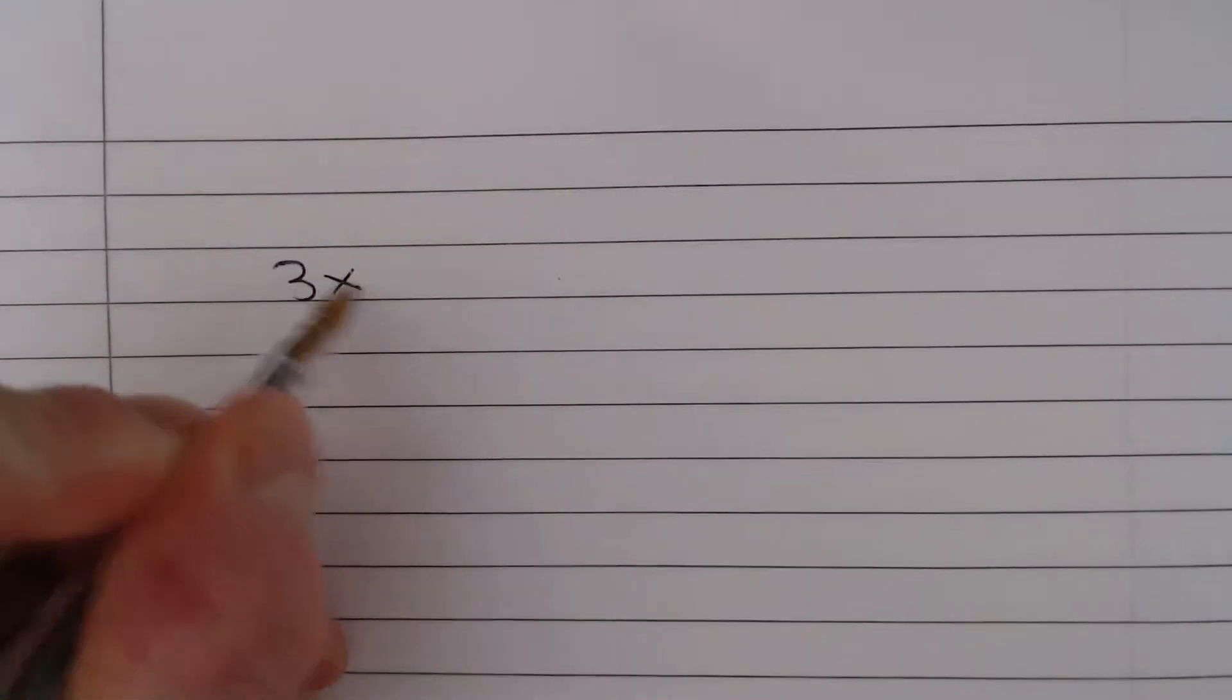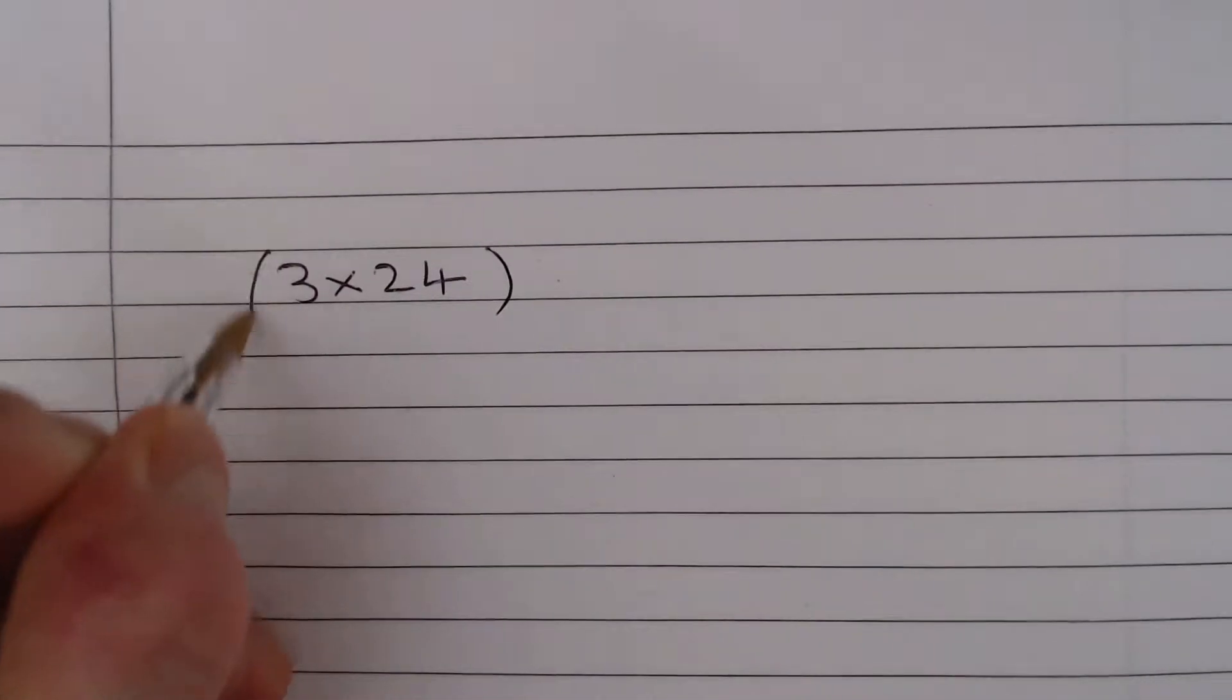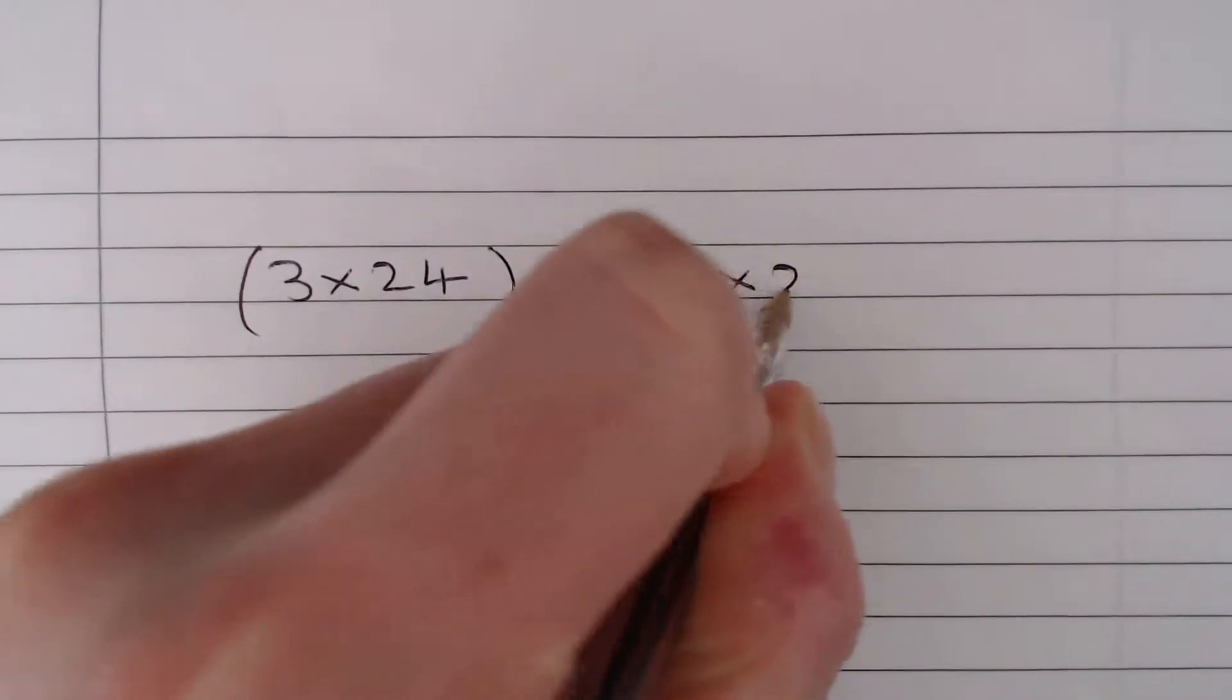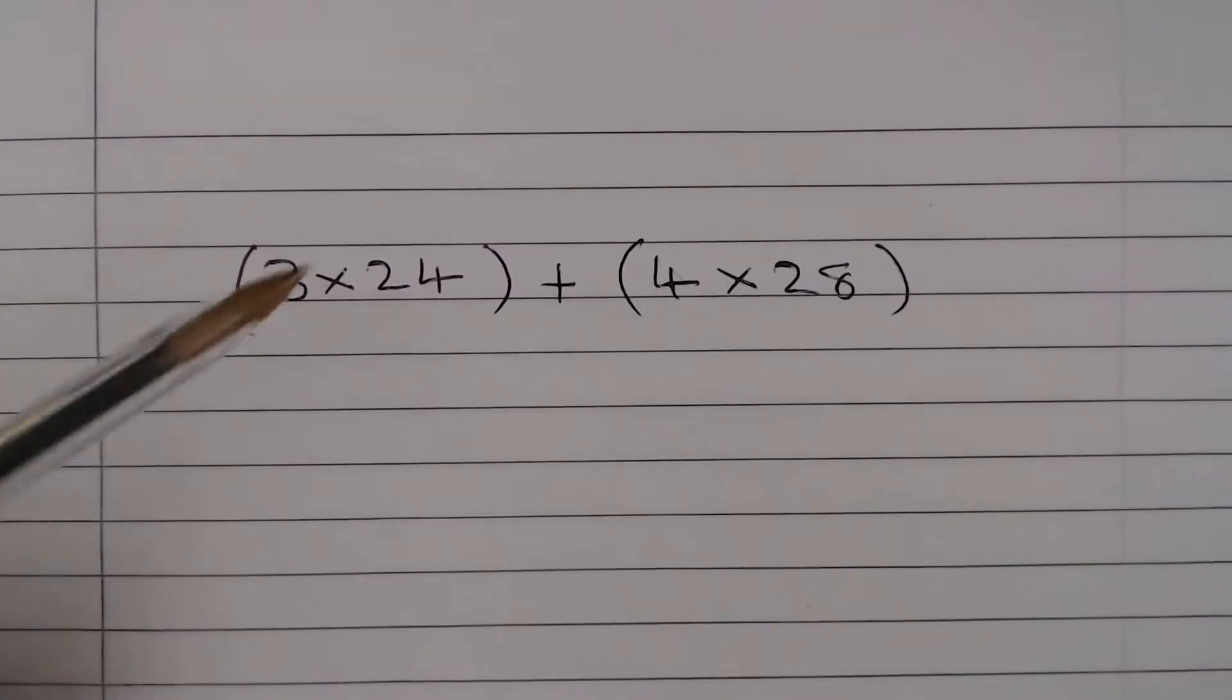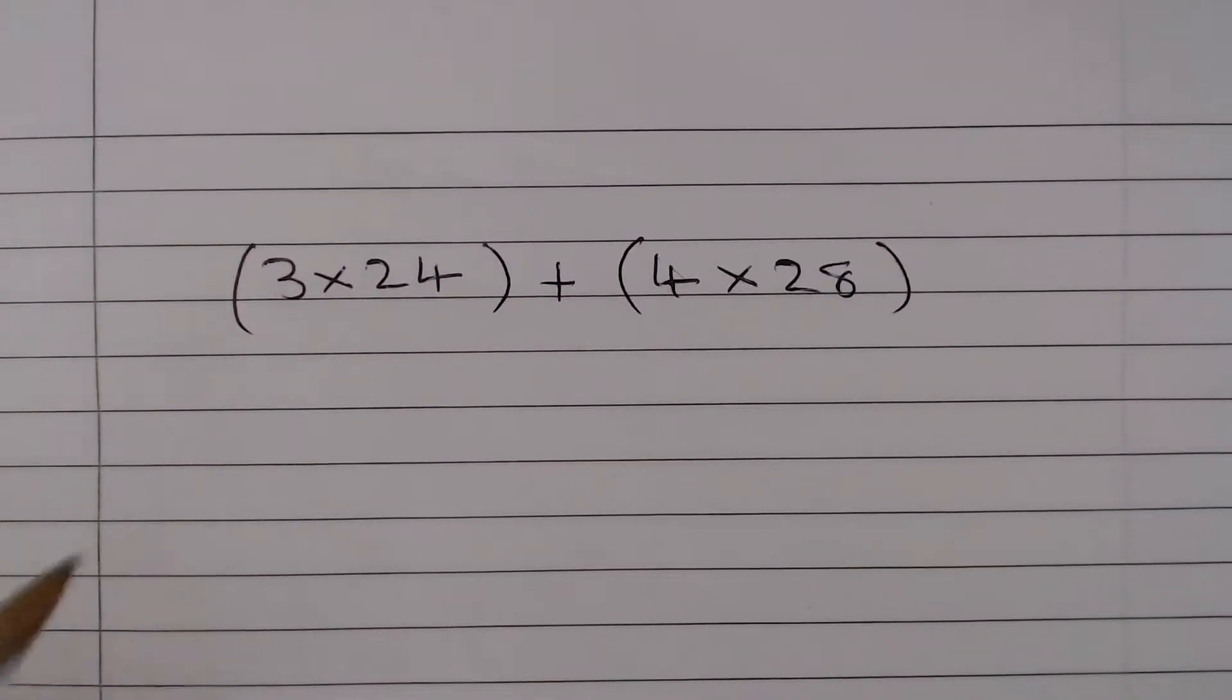So the calculation that we need to do is 3 multiplied by 24, and we need to add that onto 4 multiplied by 28. So we first need to do 3 times 24 and then 4 times 28.